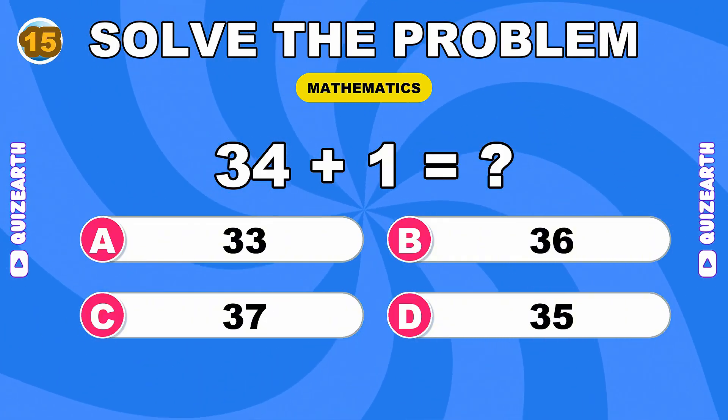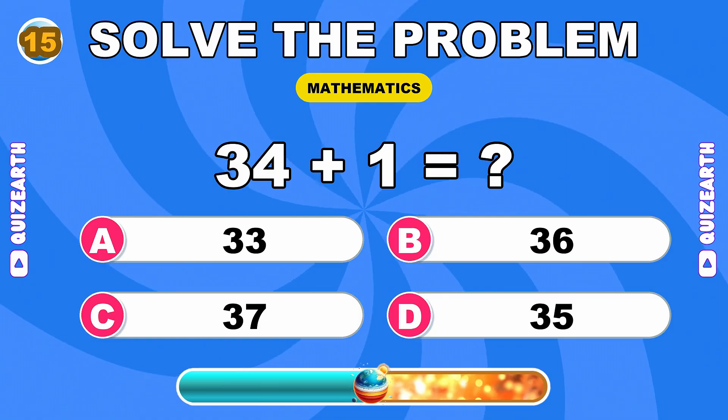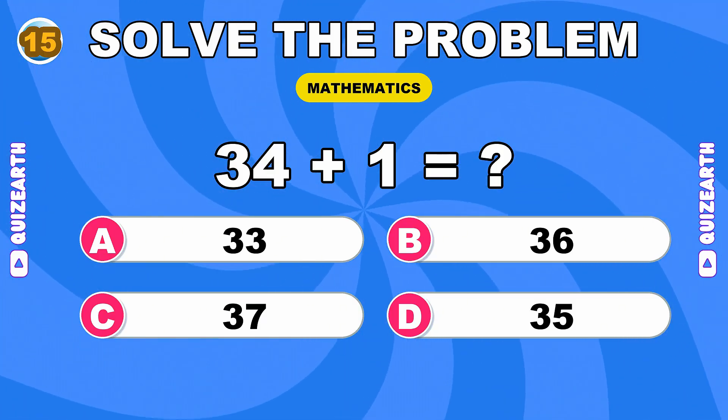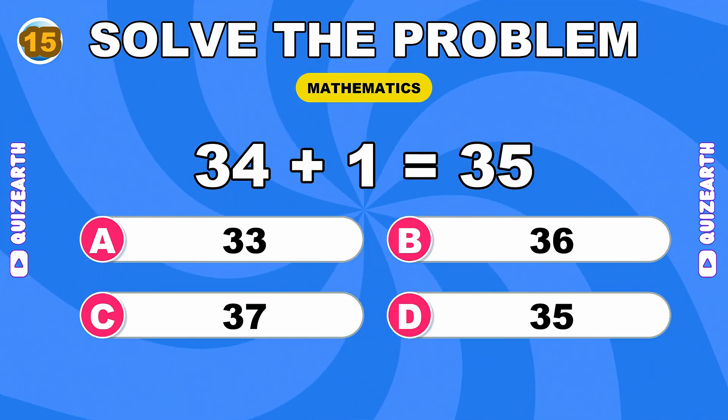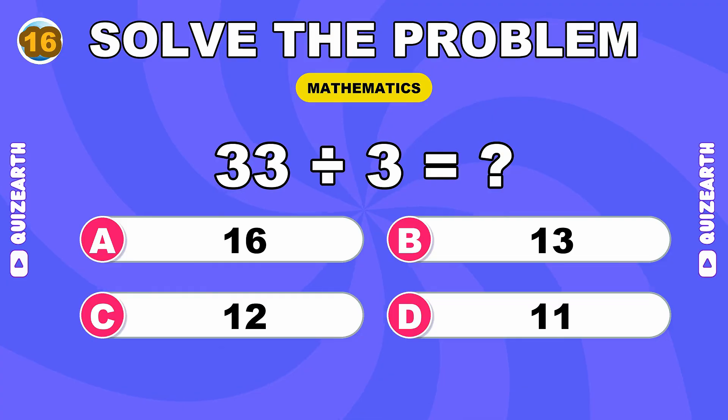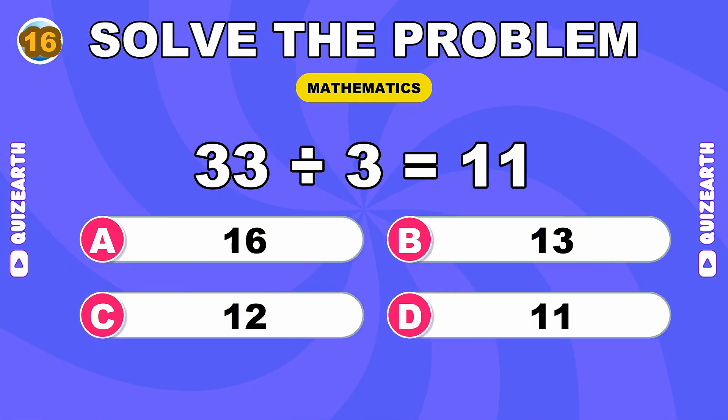What do you get when you add 34 and 1? So smooth, 35. What is 33 divided by 3? You're in the zone, 11.